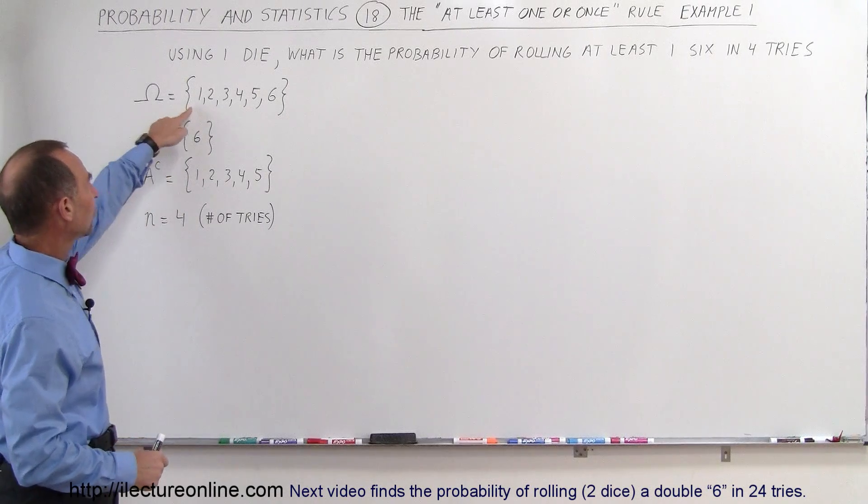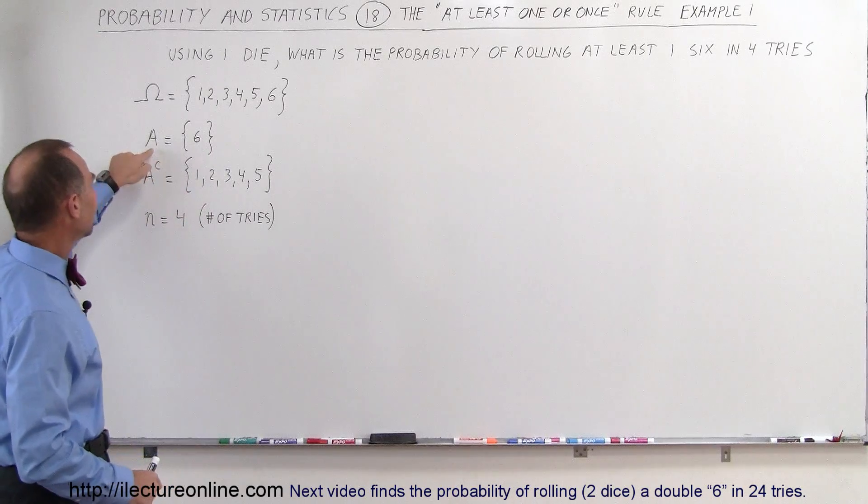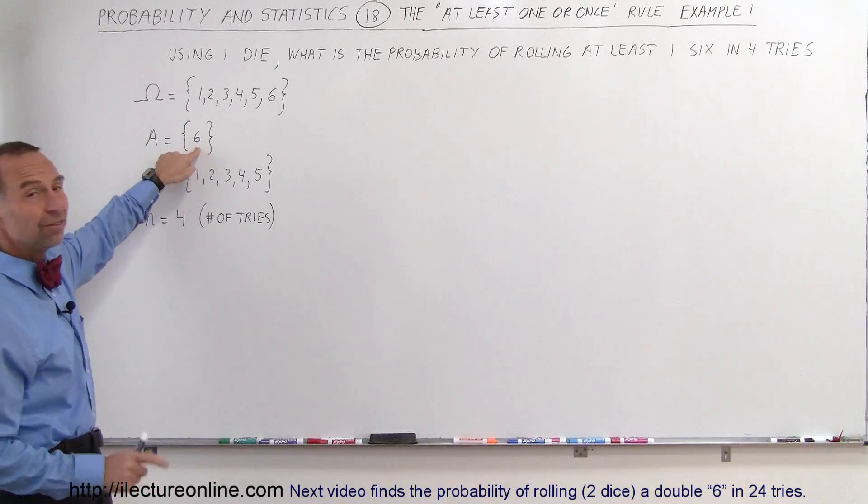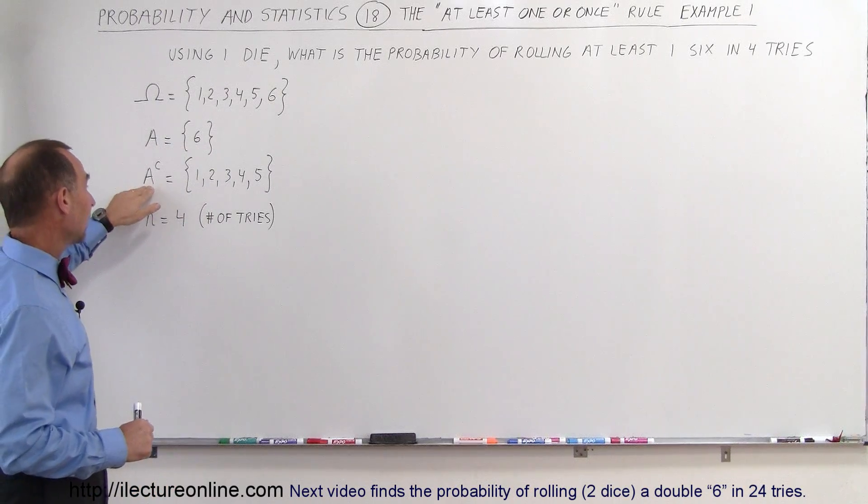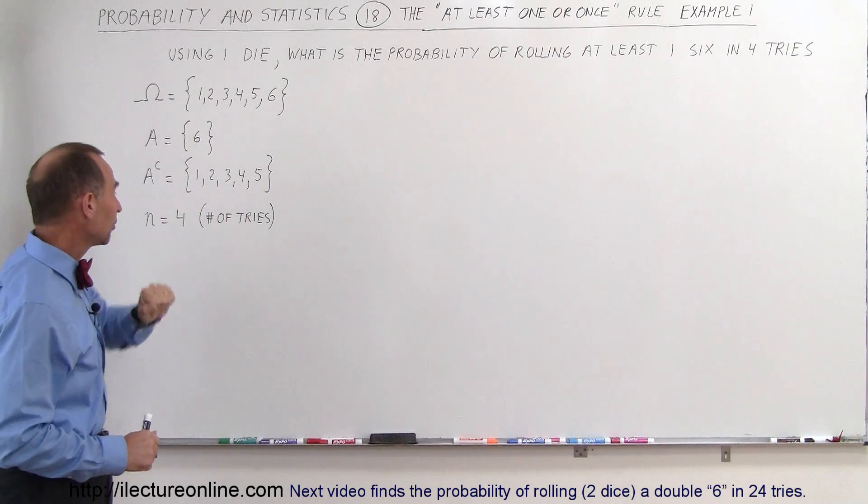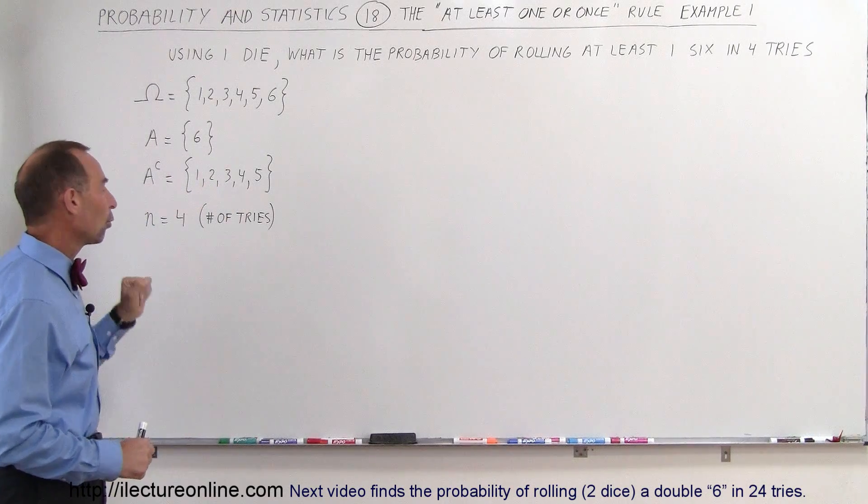The sample space is all the numbers on the die. The event we're trying to achieve is the number six. The complement is all the other numbers, and the number of tries is four, so n equals four.